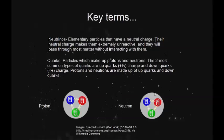Quarks are fundamental particles which make up protons and neutrons. The two most common types of quarks are up quarks, with a plus two-thirds charge, and down quarks, with a minus one-third charge.